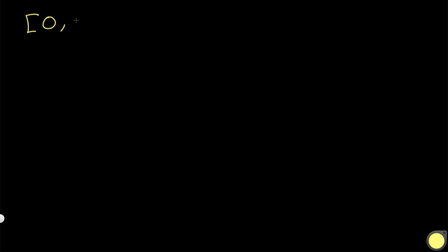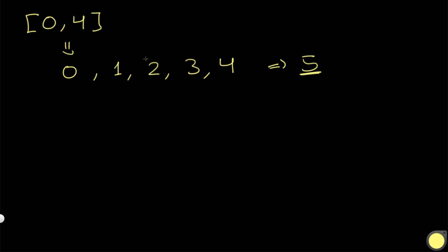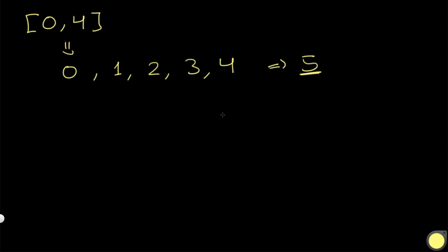So let's see how we can actually solve this. One thing to notice is that the expected sequence is an arithmetic series. For example, with range [0, 4], the numbers are 0, 1, 2, 3, and 4 — a total of 5 numbers. We know it's an arithmetic series because the difference between consecutive numbers is always the same, and in this case the difference is always 1.